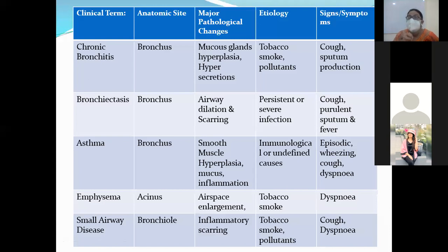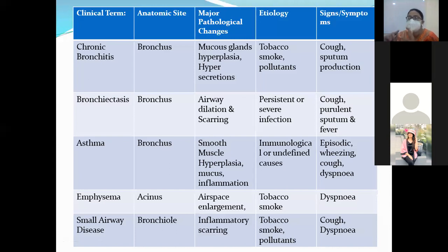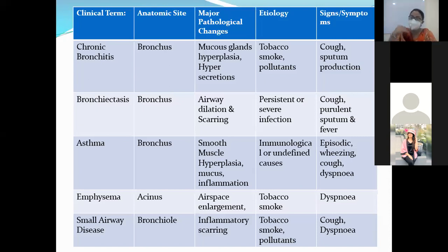Asthma anatomically involves the bronchus. Pathologically, it is associated with smooth muscle hyperplasia, increased mucus production, and associated inflammation. Asthma is basically an immunological response — a hypersensitivity response. Clinically, it shows episodic wheezing and cough.